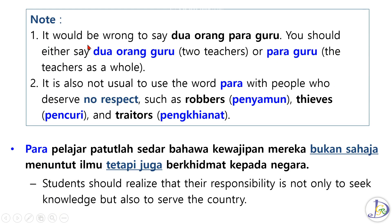Note: it would be wrong to say dua orang para guru for two teachers. You should either say dua orang guru (two teachers) or para guru (the teachers as a whole). It is also not usual to use para with people who deserve no respect, such as robbers (penyamun), thieves (pencuri), and traitors (pengkhianat).